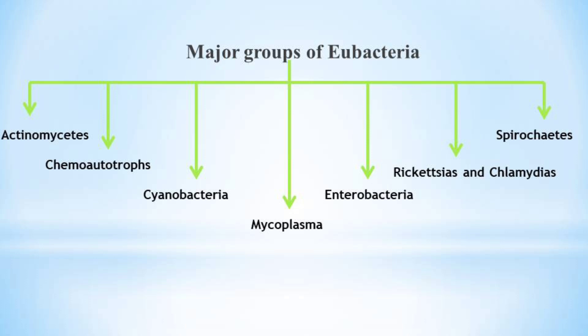The sixth group is Rickettsias and Chlamydias. These are small gram-negative bacteria and are pathogenic — for example, Rickettsia and Chlamydia. The seventh group is Spirochetes. These are long coil-shaped cells with flagella at both ends, and they are pathogenic — for example, Treponema.